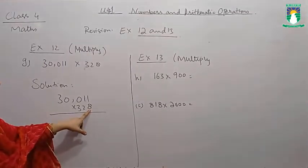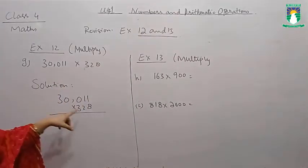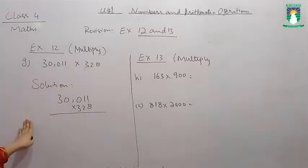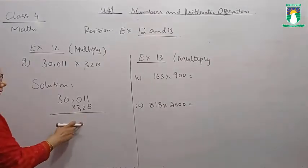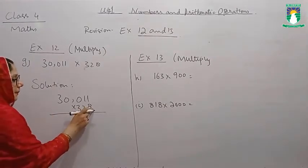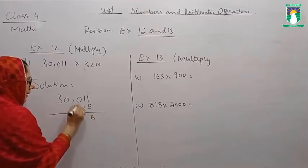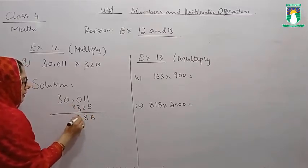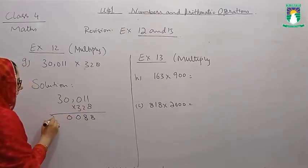And we start with the lowest place value, we start with the ones digit, then with the second place value, then with the third place value. According to our learned rule, we are going to multiply the whole digit with 8. 8 ones are 8, 8 ones are 8, 8 zeros are 0, 8 zeros are 0, 8 threes are 24.